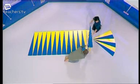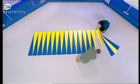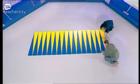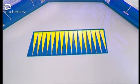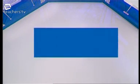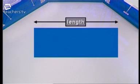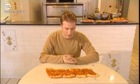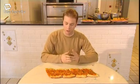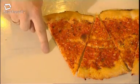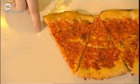The more slices you split the circle into, the closer it gets to becoming a rectangle. Now we have a shape whose area we can easily calculate. As you know, the area of a rectangle is length multiplied by width. First, the width of the rectangle — these slices come from the original circle, so the distance here is the same as the circle's radius.